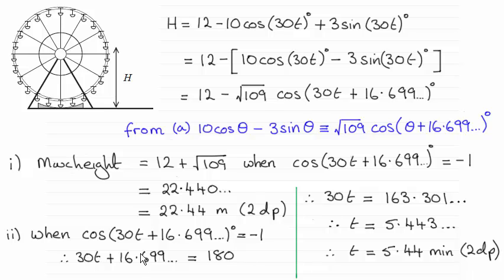So it's just a question now of rearranging this, subtracting 16.699 from both sides and dividing by 30, and you find that t turns out to be 5.44. It's given in minutes, and we had to give it to two decimal places. So I hope that's given you an idea on handling that one.